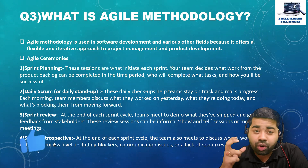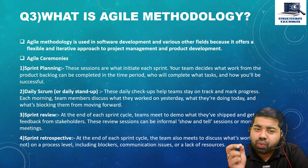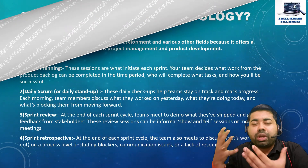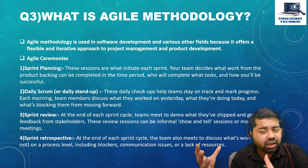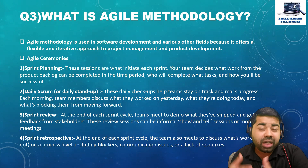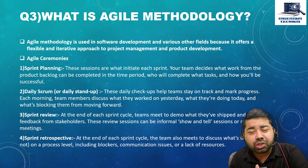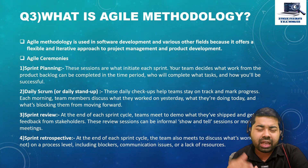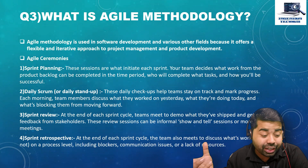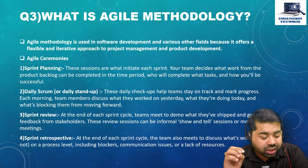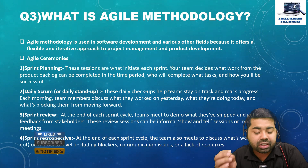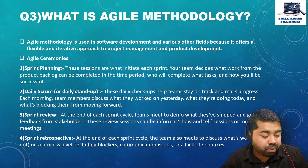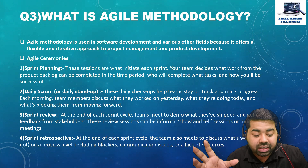We have one more ceremony called the Sprint Retrospective meeting. In this meeting, we discuss how to improve our sprint in the coming sprint. We discuss what went well, what went wrong — meaning tasks we were not able to achieve — and how to do more improvement in the existing sprint. At the end of each sprint cycle, the team meets to discuss what is working at the process level.